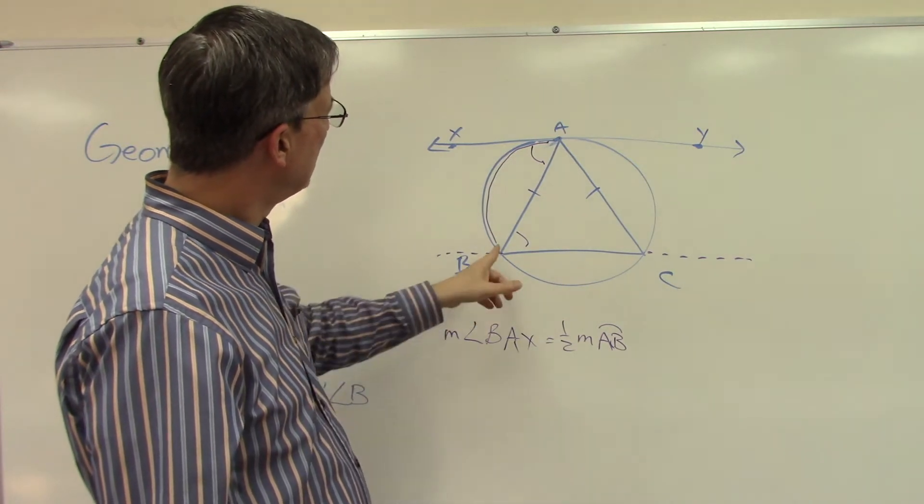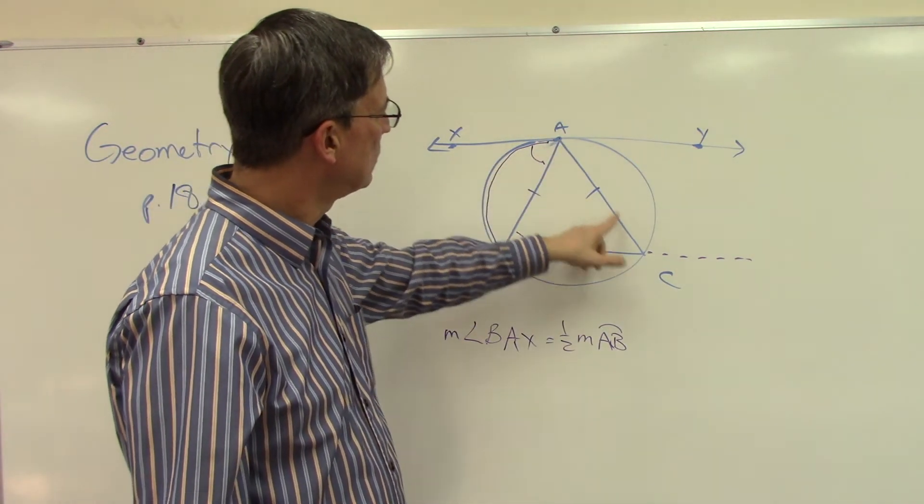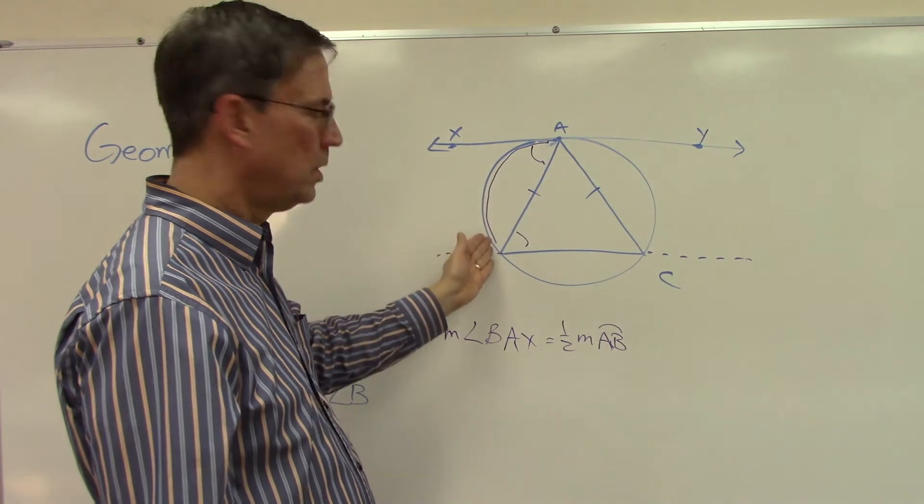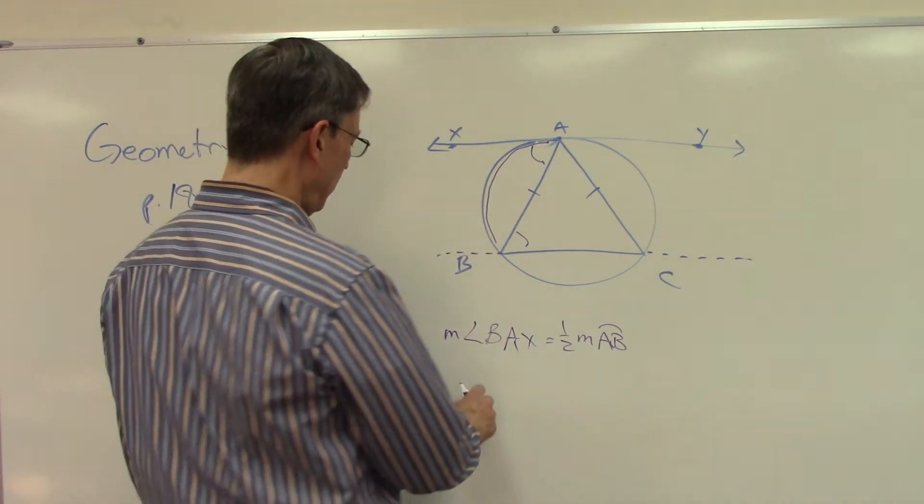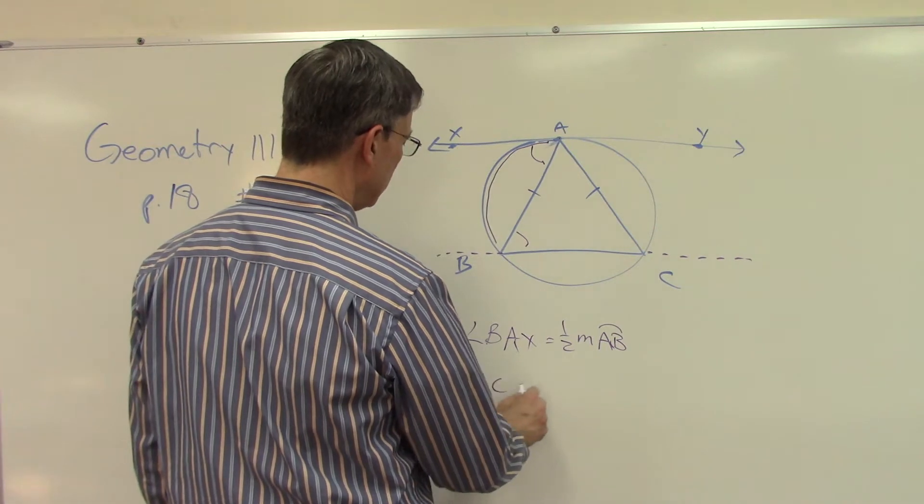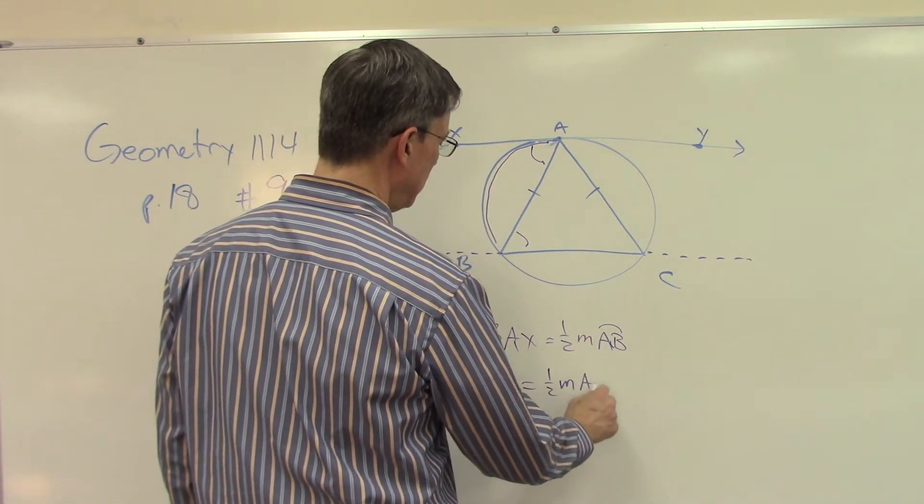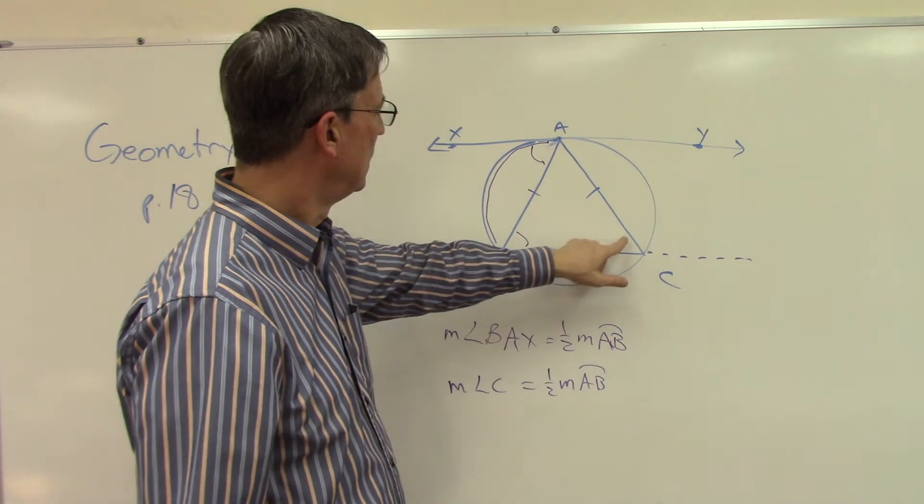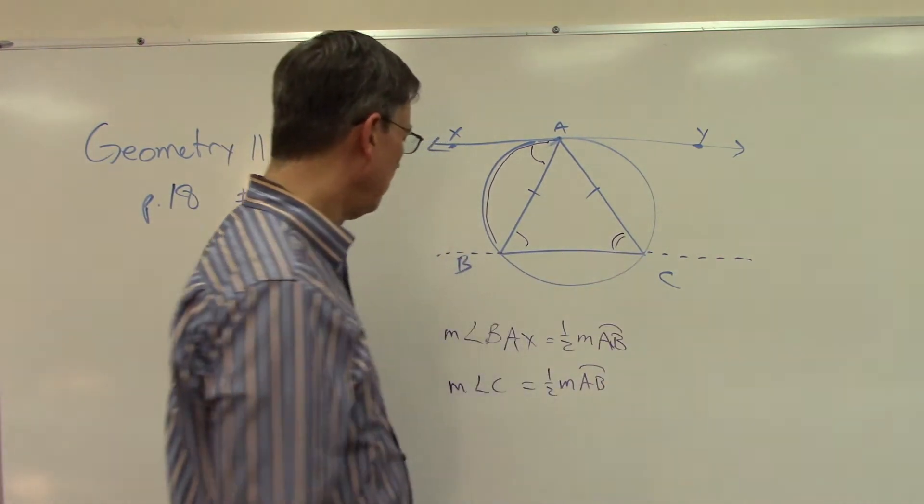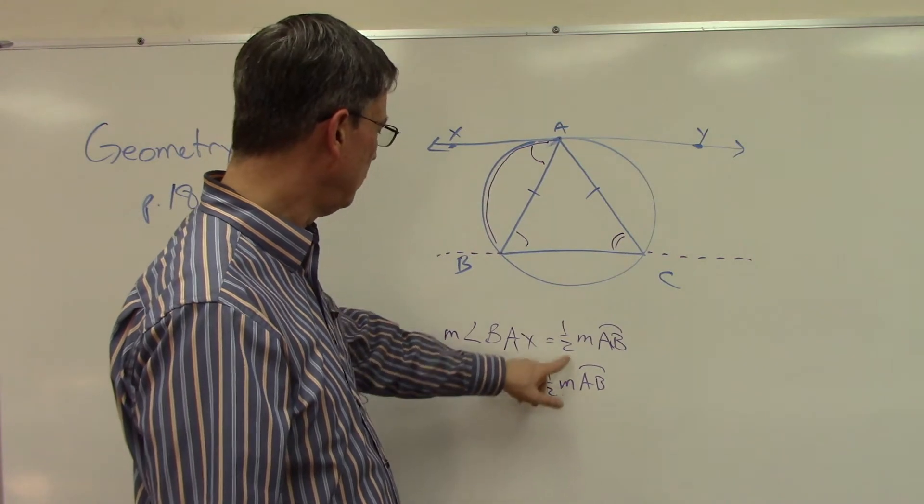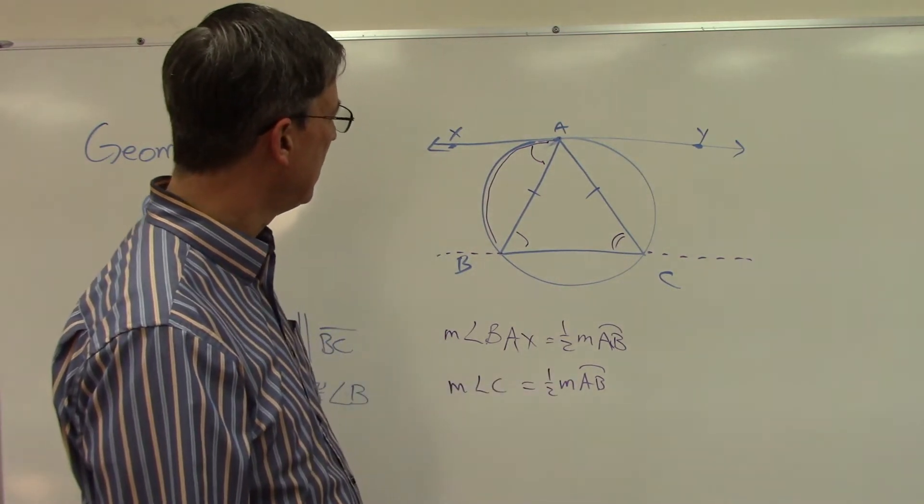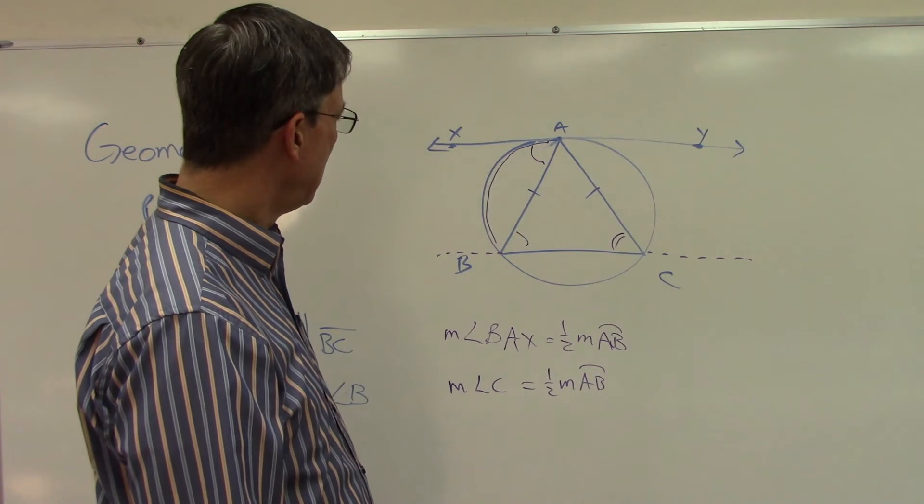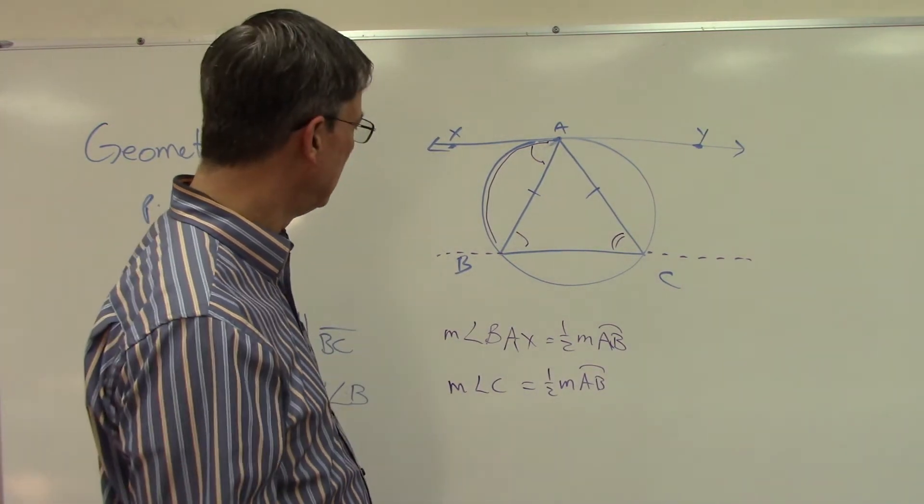Now let's notice something here. This is an intercepted arc and here's an inscribed angle. You see that angle C is equal to the same arc. The measure of angle C is also equal to one half the measure of arc AB. This angle right here. So that is congruent. Oh look, I've got two things equal to each other, interesting. Looks like I could do a substitution.